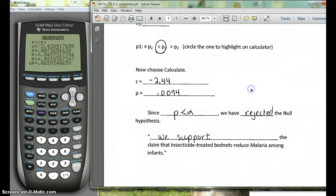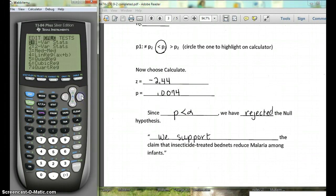And since our claim was the alternate hypothesis, since we rejected the null hypothesis, we support the alternate hypothesis. Okay, so again, to get the p-value on our calculator, we're going to hit stat, over to tests, and choose number six, two prop z test.